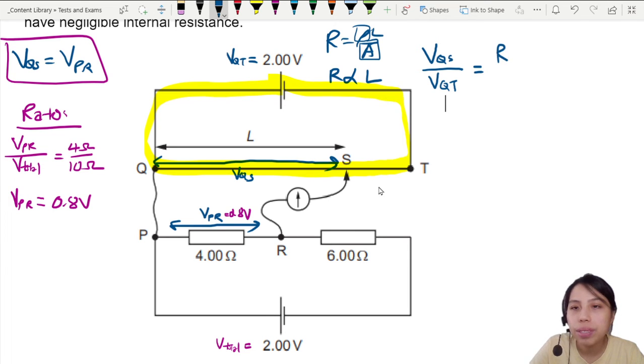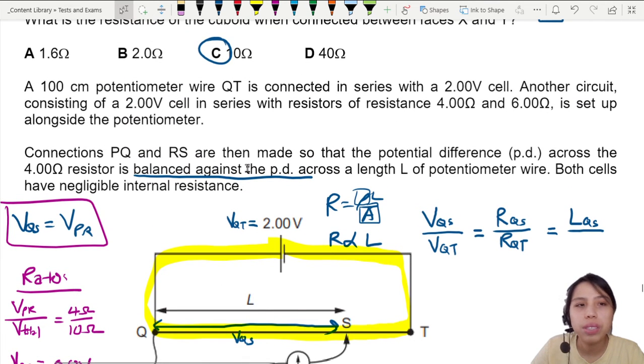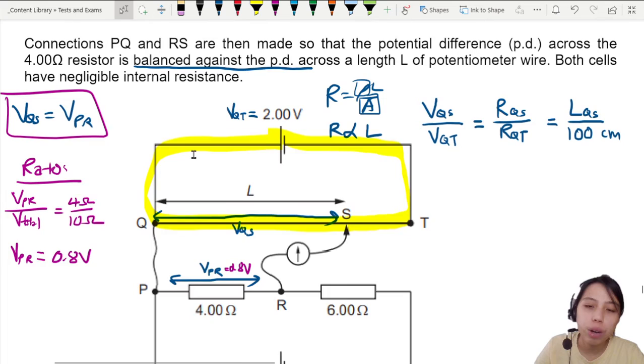Equals to the ratio of the resistance QS over the total resistance of the wire QT. We're going to make one more link. Because R is proportional to L, I can then say, by the way, also the length of QS, which is L, is proportional to the total length of the wire, which is... Did they give this to us? Ah yes, 100 cm potentiometer wire right on top there. So this will be 100 cm. This is the relationship of how potentiometers work.